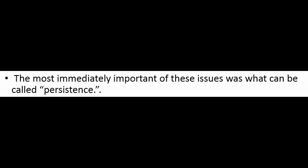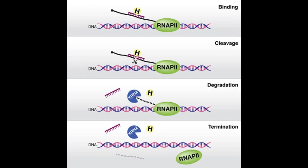The most immediately important issue was persistence. Synthetic oligonucleotides are foreign to the cells into which they are introduced and immediately become prey for endogenous nucleases. If synthetic oligonucleotides were to attain the level of persistence needed, they would have to be protected from those endogenous nucleases.